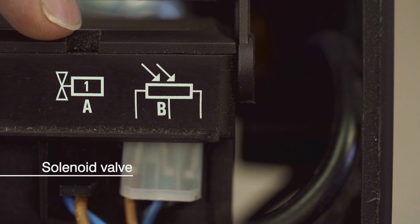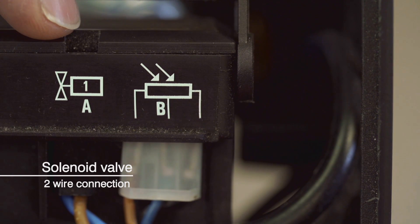Next is the solenoid valve connection. A two wire connection the same as the analog box.